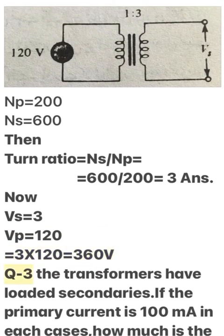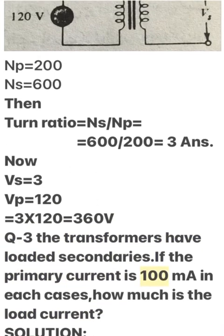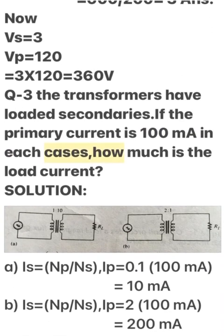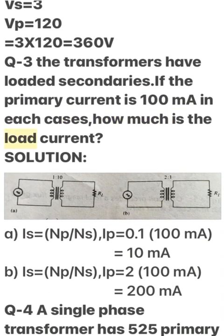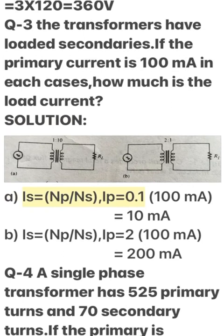Q3: Transformers have loaded secondaries. If the primary current is 100 mA, how much is the load current? Solution: Using Is = (Np / Ns) × Ip, with Ip = 0.1 A (100 mA). Is = (Np / Ns) × Ip. For 500 turns: Is = (Np / Ns) × Ip.